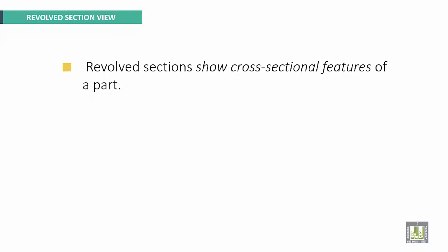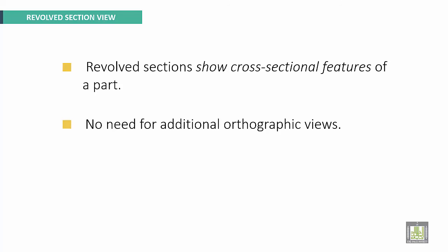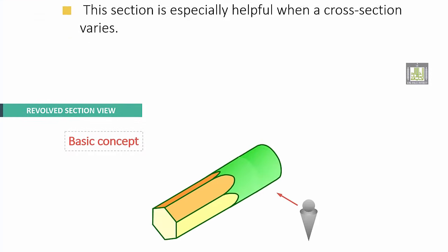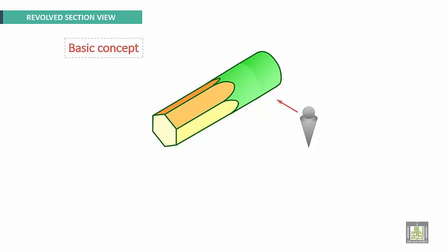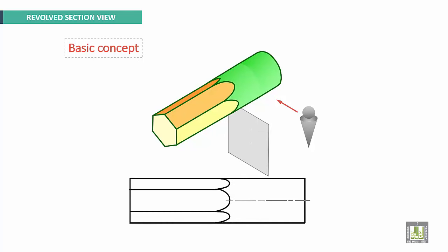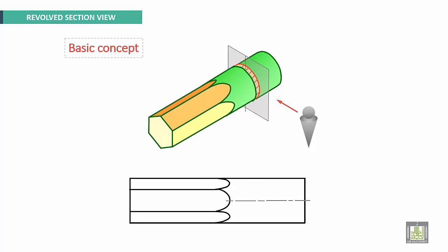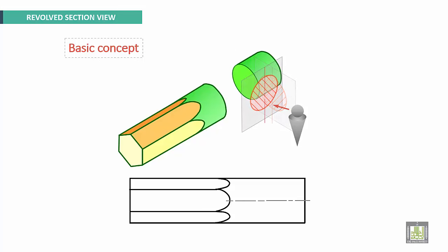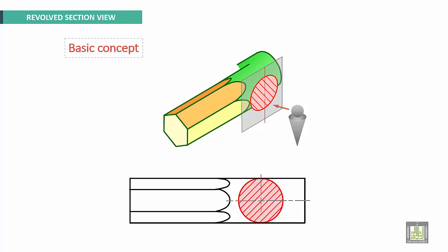Revolved Sectional View: revolved sections show the cross-sectional features of a part. There is no need for additional orthographic views. This section is especially helpful when a cross-sectional view is needed. The basic concept is: we have a part where one portion is cylindrical and here we have the shape of a hexagon. If we make a section here, we take that section and revolve it around its axis, then place it again on the same view — it is revolved around its axis.